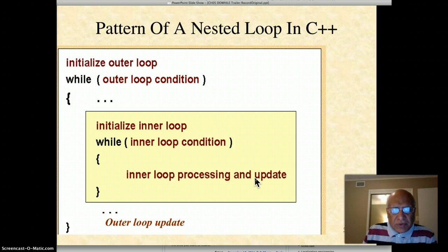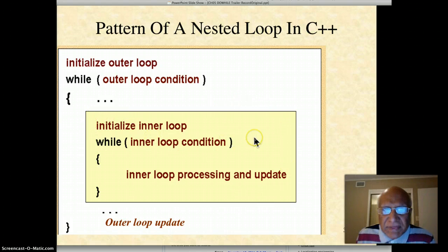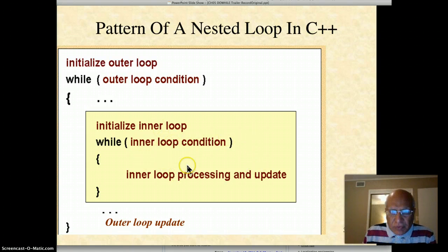Then you do the inner loop processing and update. So whatever condition makes the outer loop run a certain number of times, this yellow box will run that many times, and this will have its own processing and number of times it's going to execute.